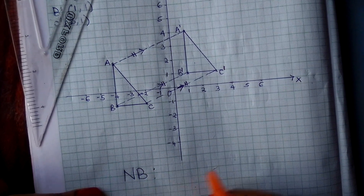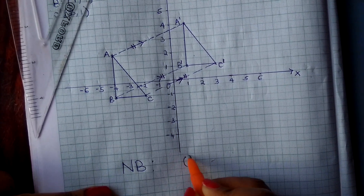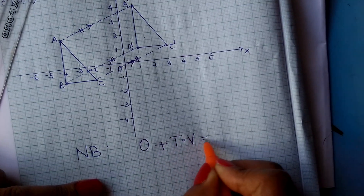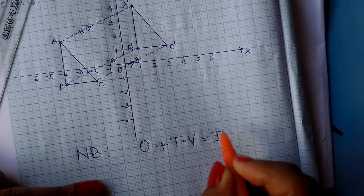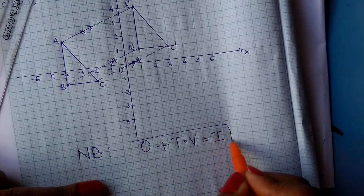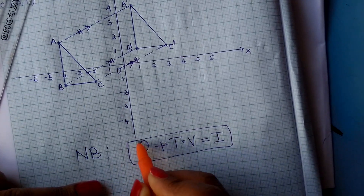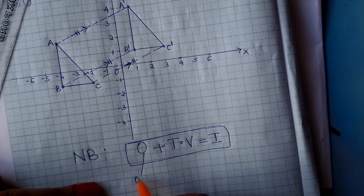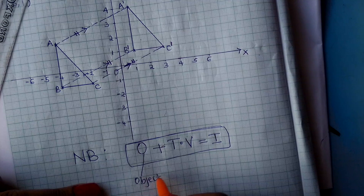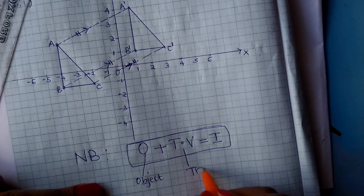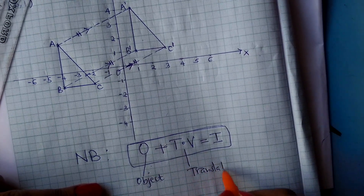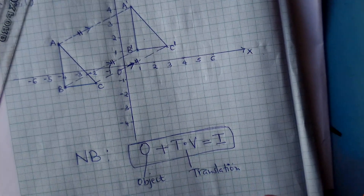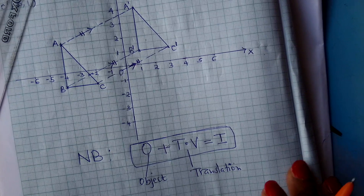Note this: object plus the translation vector will give you the image point. With this simple formula, you will be able to handle questions to do with translation. This is the translation vector. Go and practice on translation. I wish you all the best.